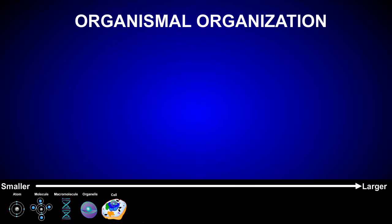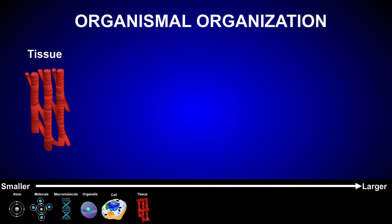At the organismal level, cells are organized into four levels of complexity. Cells combine to form tissues, which are groups of cells that act as a unit and perform a specific function. For example, cardiac muscle is a type of animal tissue that has the ability to contract.